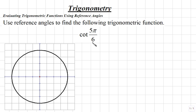So we'll begin by first finding the degree measure for our radian measure of 5π over 6. To convert radians to degrees, we'll take 5π over 6 and multiply this by 180 degrees over π.